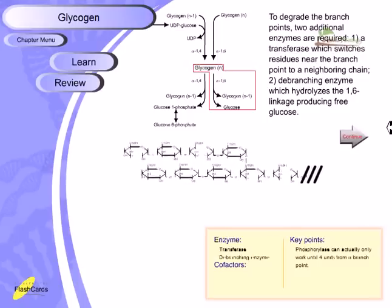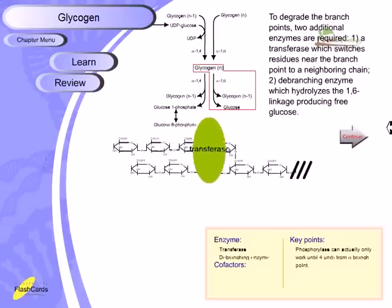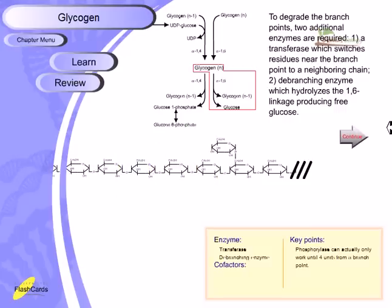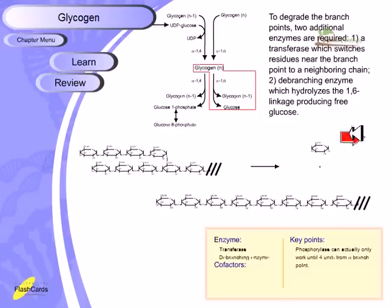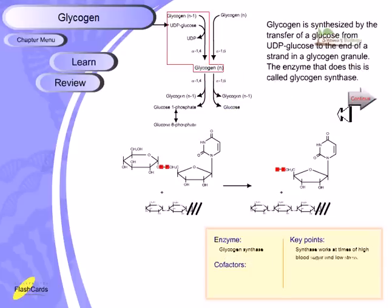To degrade the branch points, two additional enzyme activities are required. One is the transferase activity, which switches residues near the branch point, and another is the debranching enzyme activity, which hydrolyzes the alpha-1,6 linkage to produce a free chain. Both of these activities — transferase and debranching — are performed by the debranching enzyme.